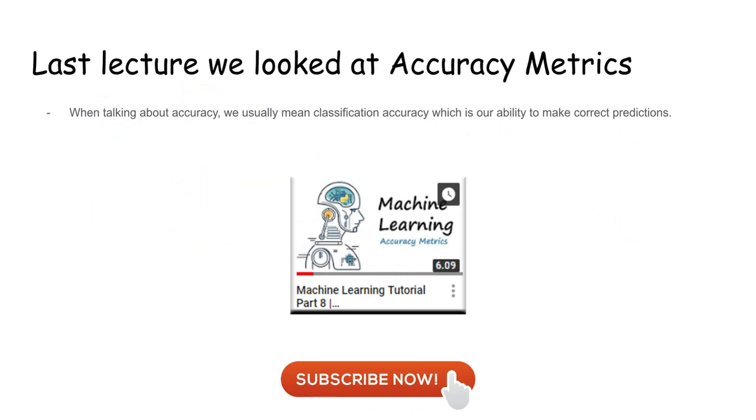In the last lecture we looked at accuracy metrics where we looked at MAE and RMSE for two ways of evaluating the accuracy of our prediction algorithm. If you want to look at that lecture, please look to my channel and find the video which is part 8 in this series.